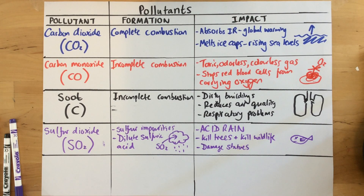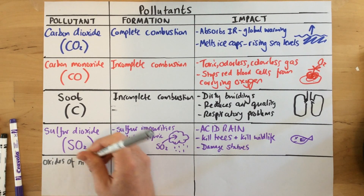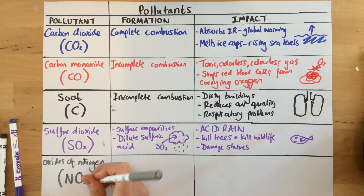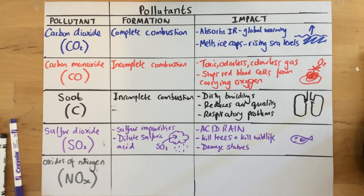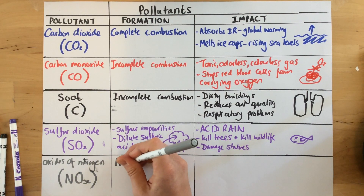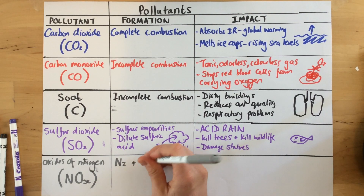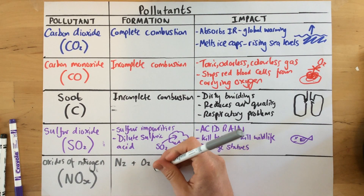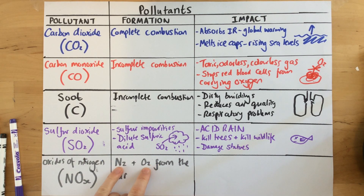The final pollutants we need to look at are oxides of nitrogen, written as NOx. The x indicates this could be one, two, or three oxygens depending on what is formed. These are formed whenever combustion occurs — for example in a car engine — where very high temperatures cause nitrogen and oxygen already present in the air to react together, producing these oxides of nitrogen.